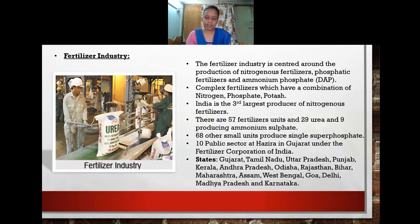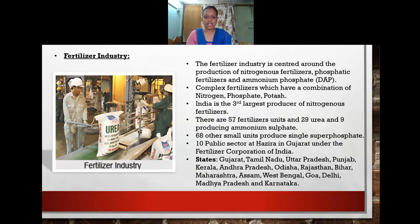Fertilizer industries are located across many states including Gujarat, Tamil Nadu, Uttar Pradesh, Punjab, Kerala, Andhra Pradesh, Odisha, Rajasthan, Bihar, Maharashtra, Assam, West Bengal, Goa, Delhi, Madhya Pradesh, and Karnataka. For a three-mark short note, cover GDP contribution, types of chemical industries, and key locations of fertilizer industries.